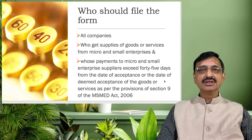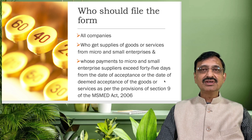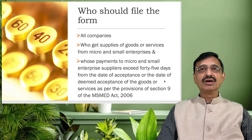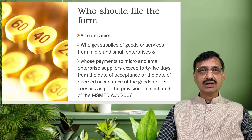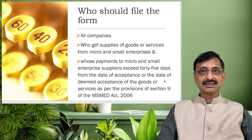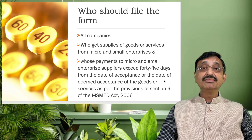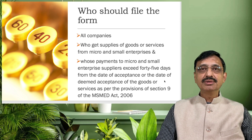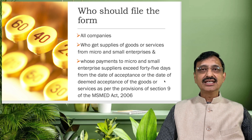So who are the specified companies who have to file this form MSME-1? All companies have to satisfy twin conditions. The first condition is they get supply of goods or services from micro and small enterprises — note that medium enterprises are not covered. The second condition is that payment is due to them beyond the period of 45 days from the date of acceptance or deemed acceptance of such goods or services, as provided under Section 9 of the MSMED Act 2006. Any company satisfying these two conditions has to furnish Form MSME-1.